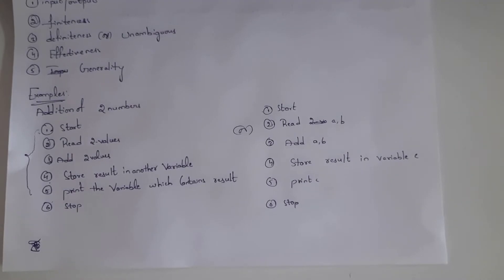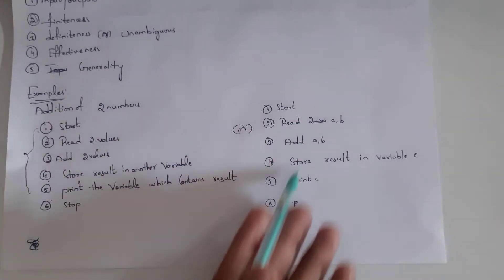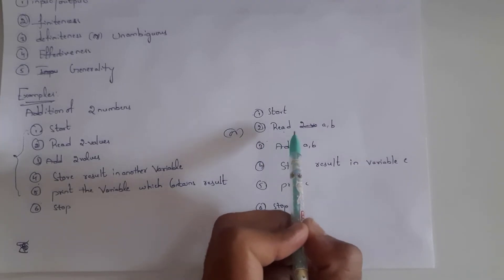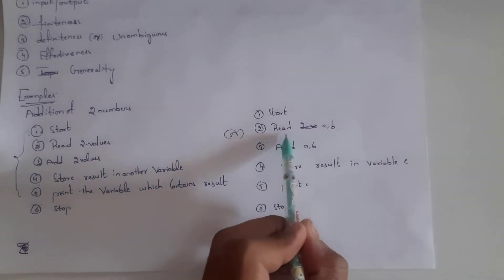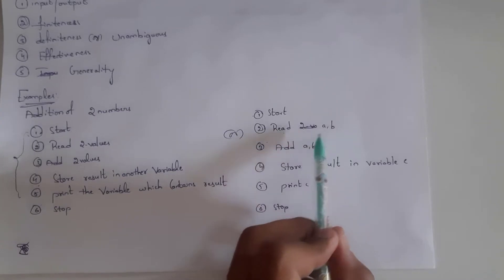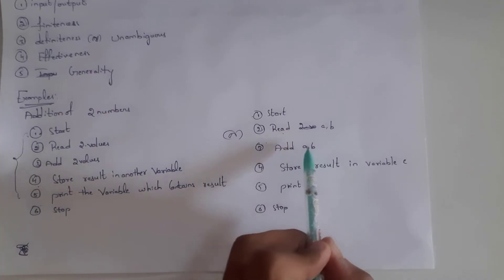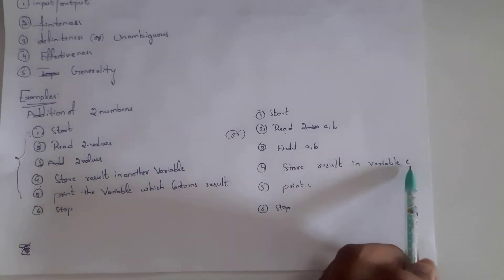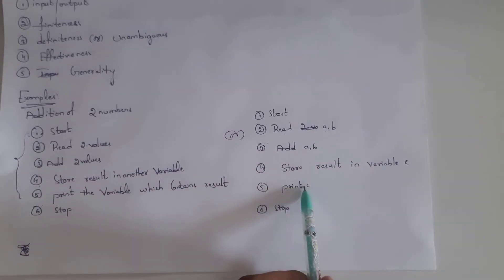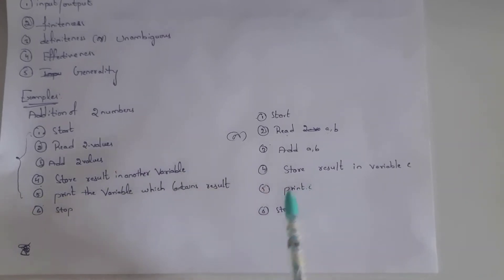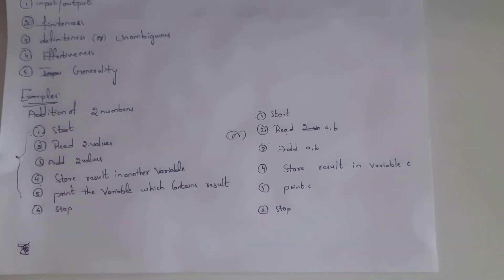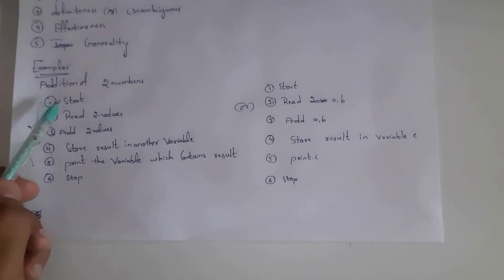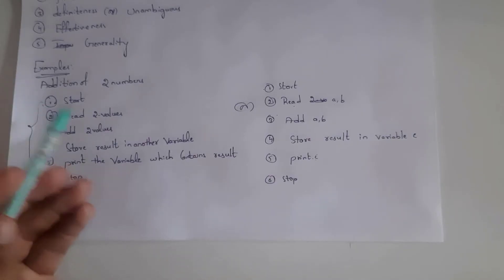You can also write the same algorithm like this. Step one: Start. Step two: Read two values, A and B. Step three: Add A and B, store the result in variable C. Step four: Print C, because it contains the result. Step five: Stop. There is no rule that you need to write the algorithm only one way.